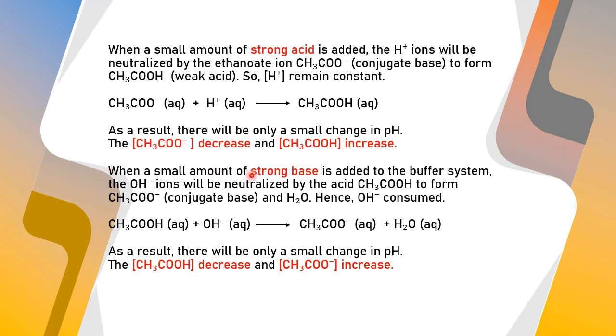Next, when a small amount of strong base is added to the buffer system, the hydroxide ion will be neutralized by the acid to form ethanoate ion and H2O. This is the equation when the strong base is added. As a result, there will be only a small change in pH. The concentration of acetic acid will decrease and the concentration of ethanoate ion will increase.